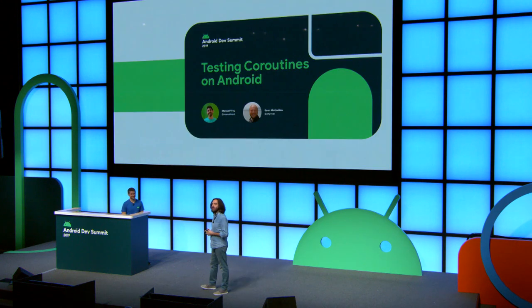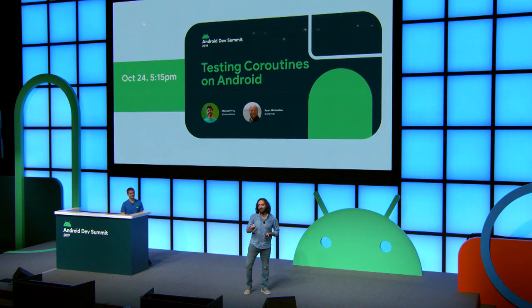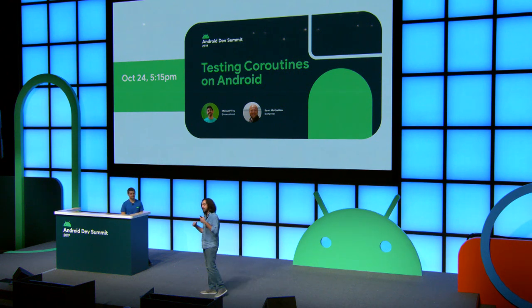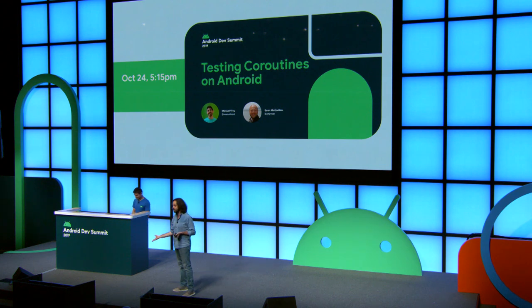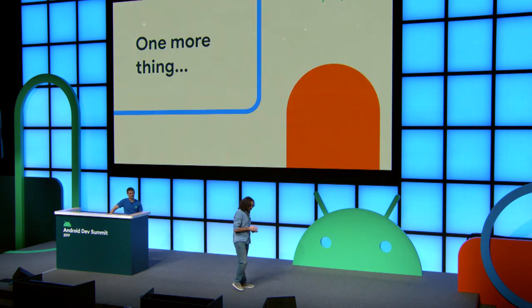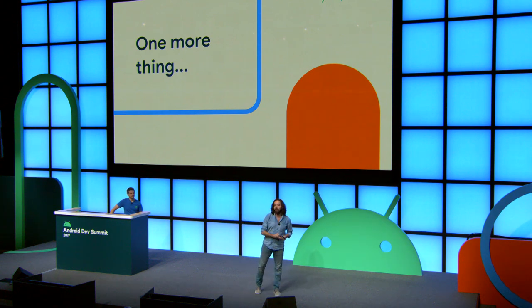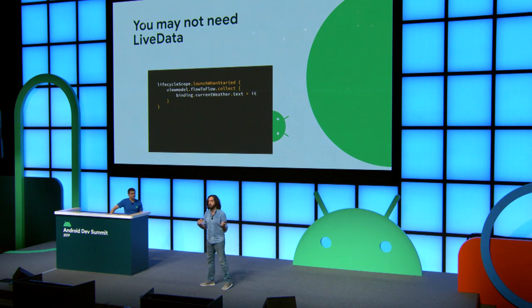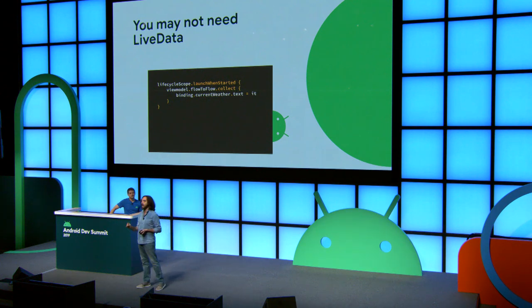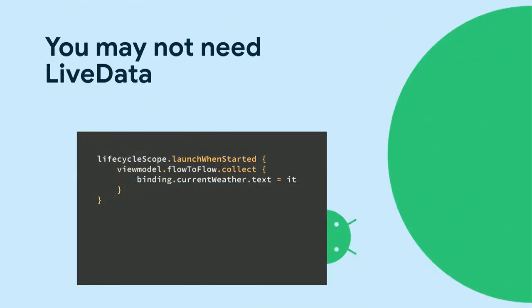Testing is important. We have a full-fledged talk on testing by Sean and Manu tomorrow at 5:15 — please go watch it to see how you can effectively use coroutines in your tests. Before we leave, there is one more thing. With the introduction of flow and the lifecycle scopes we've shown, you can get the benefits of LiveData without using LiveData. You could use lifecycleScope.launchWhenStarted and start collecting on a flow — this will behave exactly the same way LiveData behaves for your UI. It's not 100% the same because LiveData has caching behavior, but it's close. For any questions, we'll be upstairs for the Q&A. Thank you.